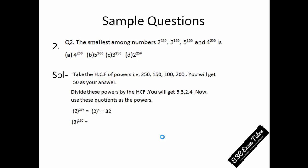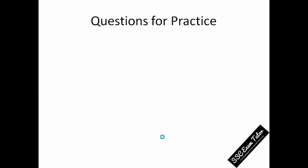In the second case, we need to divide 150 by the HCF, that is 50—you get 3, so 3 to the power 3 is equal to 27. In the third case, you will get 25, and in the fourth, 256. You need to find the smallest number, so the smallest number is definitely 5 to the power 100.